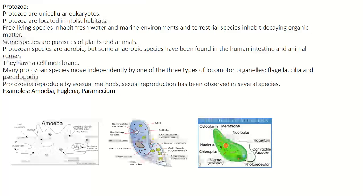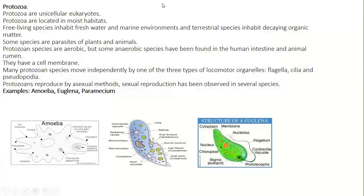Many protozoa species move independently by one of three types of locomotor organelles: flagella, cilia, and pseudopodia. Protozoans reproduce by asexual and sexual methods. Examples include amoeba, euglena, and paramecium.